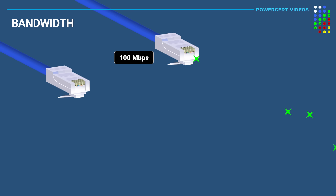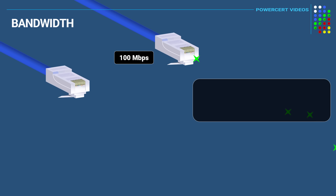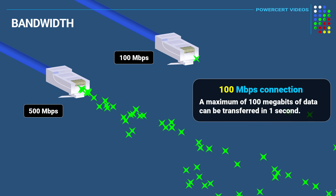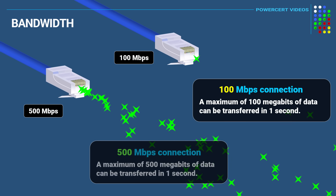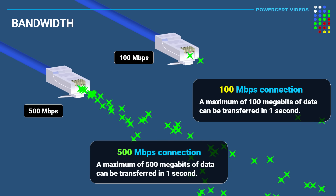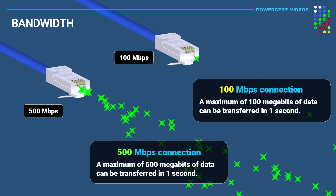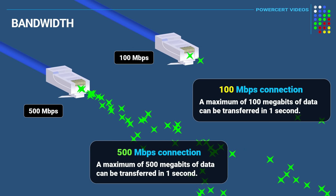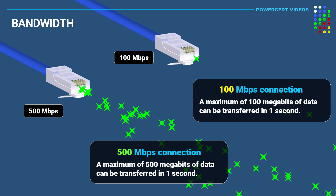For example, if you have a 100 megabit internet service connection, then a maximum of 100 megabits of data can be transferred in one second. Or if you have a 500 megabit connection, then a maximum of 500 megabits of data can be transferred in one second. So even though both connections transmit data at the same speed, the 500 megabit connection will seem faster because it can transfer five times more data in one second.